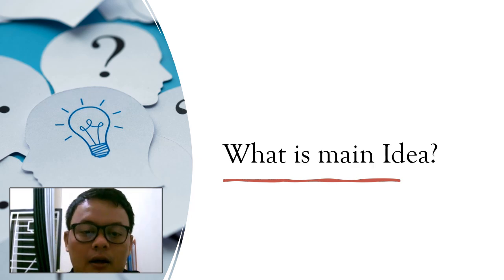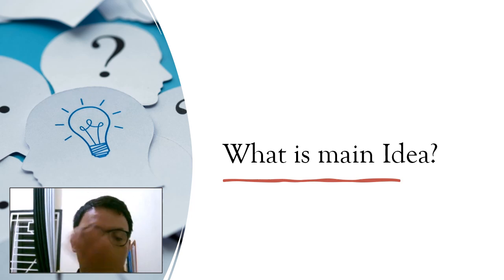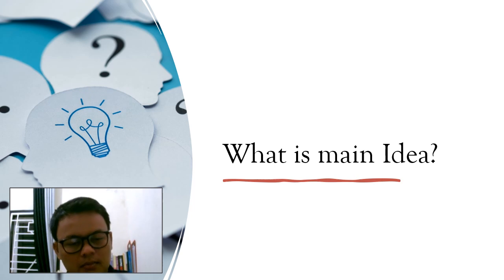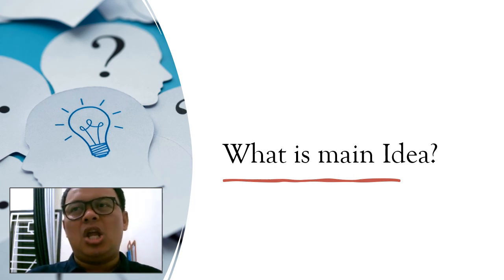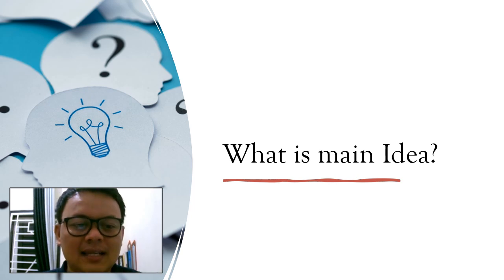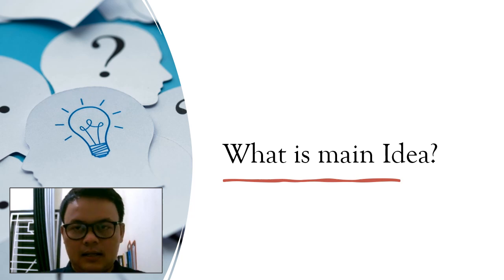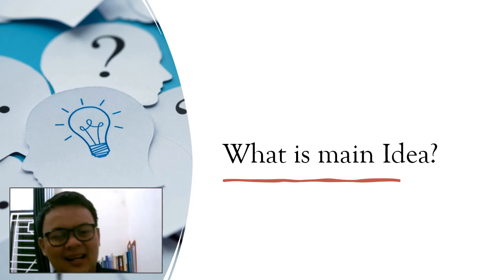Let's move on to the first thing: what is the main idea? Main idea is the key information of a certain paragraph. If a paragraph is very long, not all the information is essential — some parts are supporting evidence, elaboration, and so on. The main idea is the key information that the author wants to deliver in the text.